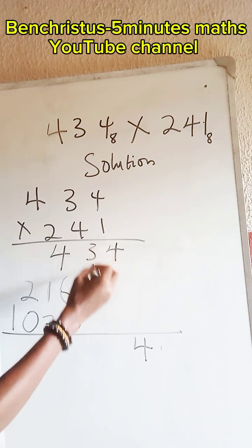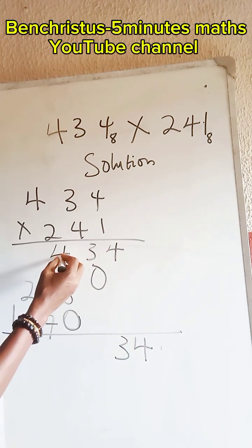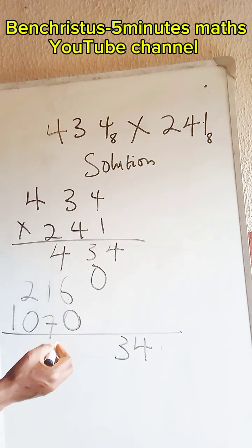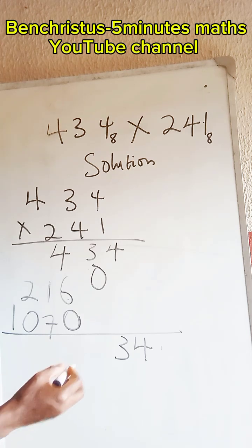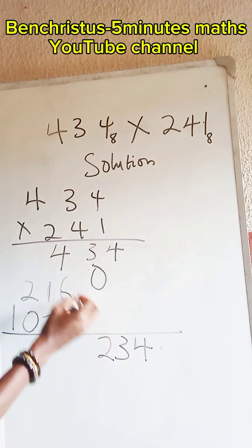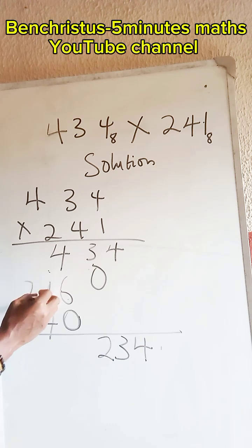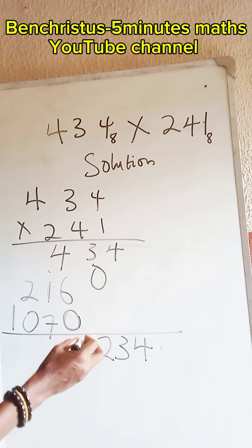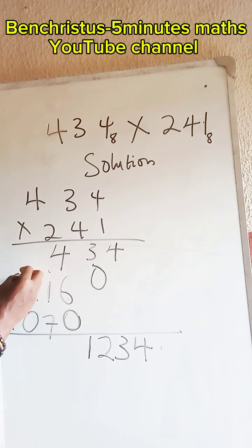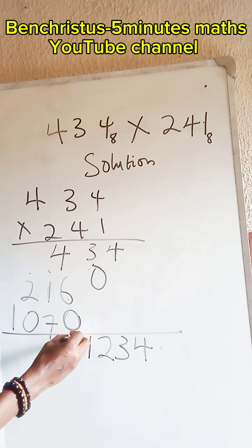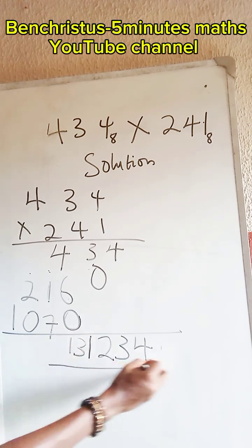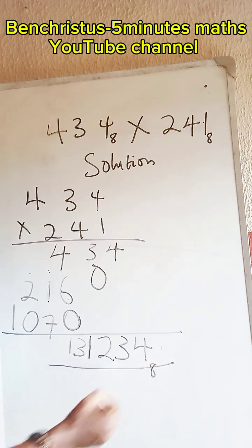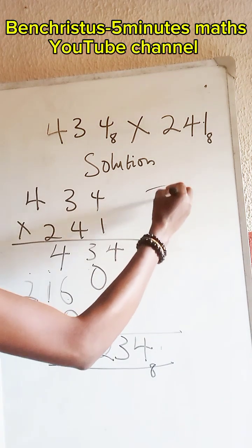Adding the partial products: 4 plus nothing is 3; 4 plus 6 is 10. 10 divided by 8 is 1 remainder 2 — write 2, carry 1. 1 plus 1 is 2, plus 9 plus 7 is... carry the ones. 1 plus 2 is 3 — not up to 8, we write it. The final answer is in base 8.